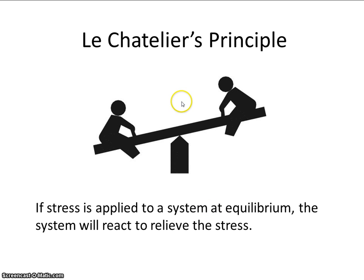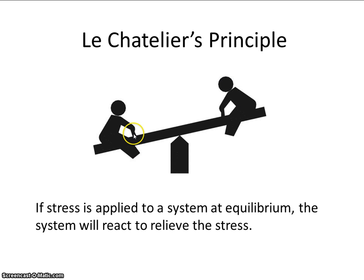A fairly good example is two people on a seesaw. Depending on how these individuals move, that will cause it to either go up or down. Similarly, if we place a demand or a stress on a reaction, it will cause it to shift left or to shift right.